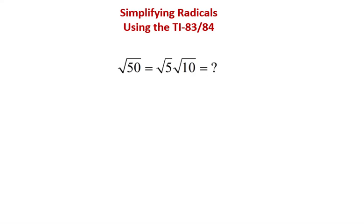If you recall, simplifying radicals means taking the radicand, which is the number under the radical, and breaking it apart into factors so that you have perfect squares and you can simplify the expression. For example, say you want to simplify radical 50. 50 can be factored as 5 times 10, but that does not do you any good because 5 is not a perfect square and neither is 10.